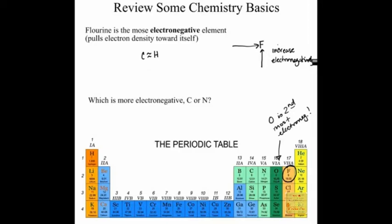For reference, nitrogen and chlorine have equal electronegativities. Typically you don't need to memorize these numbers. If we know fluorine is extremely electronegative and oxygen is also extremely electronegative, that gets us through a lot. If you're comparing atoms in the same column or row, we should be able to compare their electronegativities. For example, comparing carbon to nitrogen: since nitrogen is closer to fluorine, nitrogen is more electronegative.